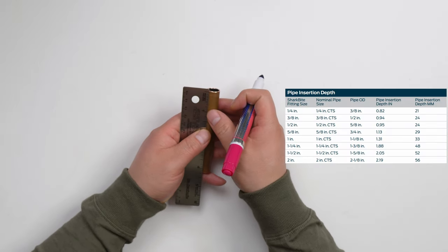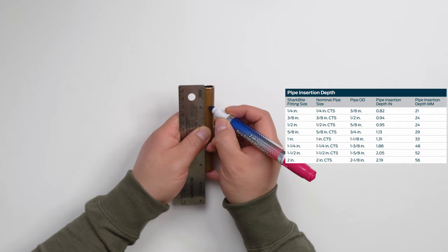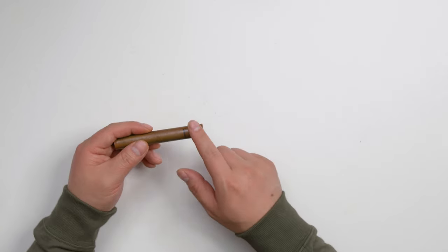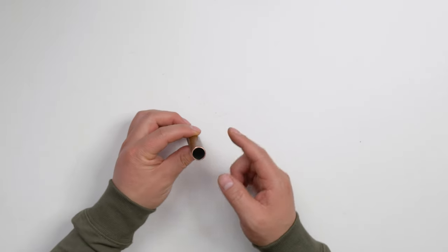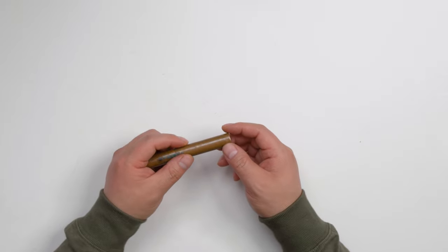Then mark the copper 0.95 inch. You don't need to use sandpaper to sand the surface, but make sure that the copper tube is round and there's no dirt, no damage.